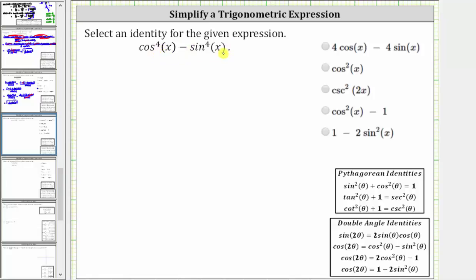We can factor this trig expression just like we factor the algebraic expression a^4 - b^4 as a difference of squares. This factors into two binomial factors: a^2 + b^2 and a^2 - b^2.